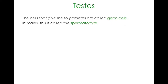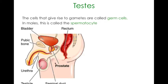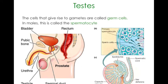Now let's look at testes. Cells that give rise to gametes are called germ cells, and in males this is called the spermatocyte - the predecessor to the sperm. In the male reproductive organ you have the testicle, the seminal duct which releases sperm, and the urethra. Males release both urine and sperm through the same opening, the urethra. Inside the testicle, the spermatocyte reproduces through meiosis to form sperm cells, which are held in little capsules and then released.